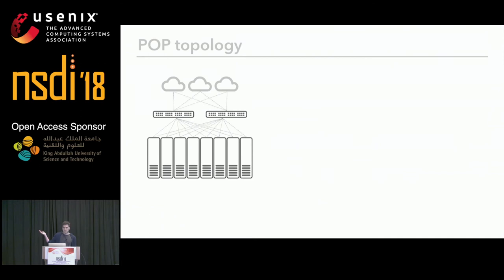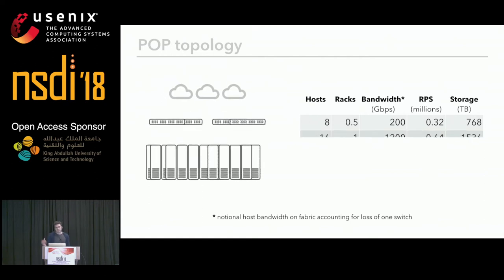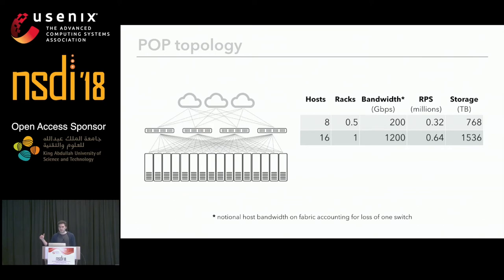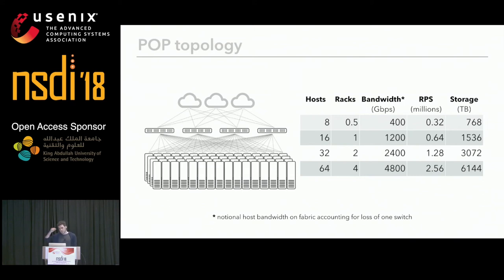A half rack of equipment for a POP is basically eight hosts connected to two switches, directly connected to a bunch of upstreams. From half a rack you can push around 200 gigabits per second accounting for individual switch failure. Each host has about 96 terabytes of storage, yielding around 320,000 requests per second from half a rack. Scaling out, a single rack has four switches, and our biggest POP can do 4.8 terabits per second upstream, about 2.5 million requests per second, with six petabytes of storage.